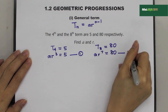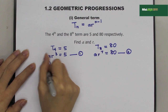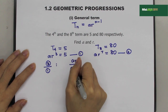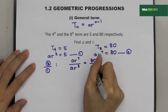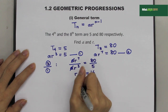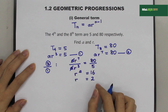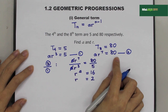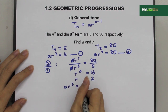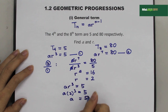Using equation 2 divided by equation 1: AR to the power 7 over AR to the power 3 equals 80 over 5, which is 16. Cancelling A gives R to the power 4, so R equals 2. Substituting R equals 2 into equation 1: A times 2 to the power 3 equals 5, therefore A equals 5 over 8.